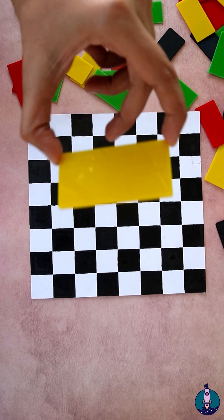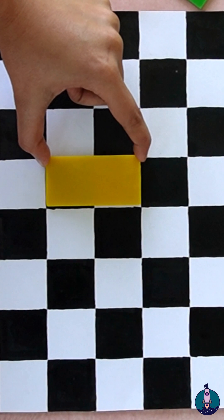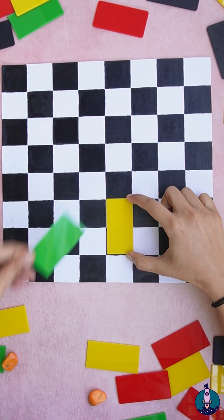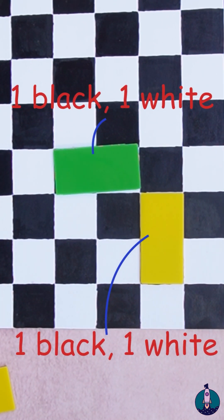A single domino on a chessboard covers one black and one white square. The main point is placing the dominoes on a chessboard requires an equal number of black and white squares.